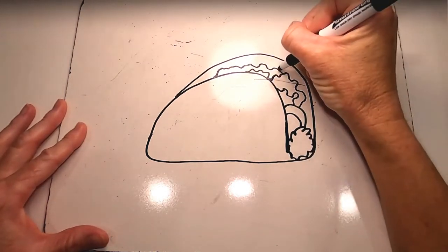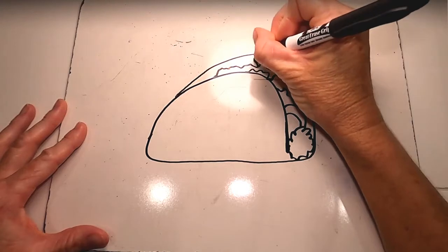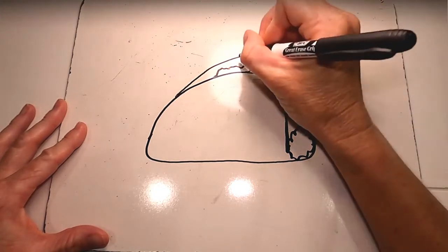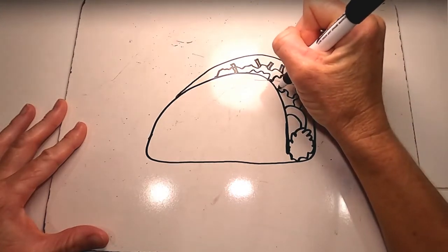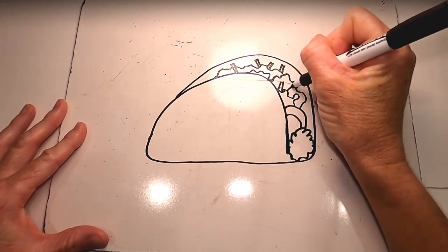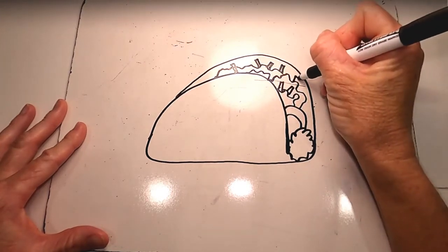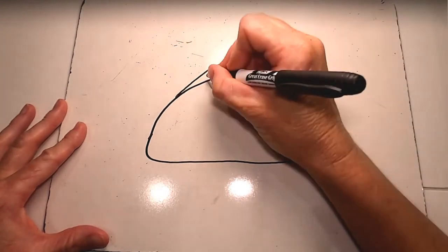And then obviously we need some cheese, lots of cheese. Takes a minute to add in cheese, cheese everywhere. Where do you like cheese? On everything, if you ask me. I like cheese everywhere. So a lot of cheese.